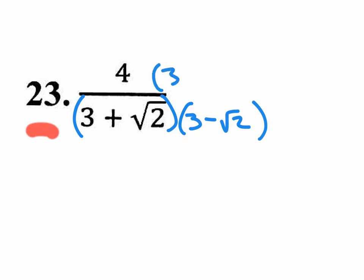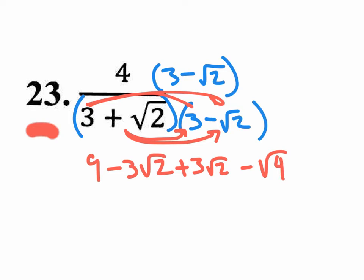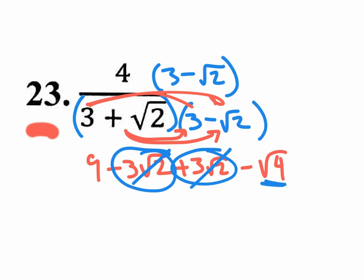What you do to the bottom, you must do to the top — 3 minus the square root of 2 up here also. On the bottom: 3 times 3 is 9. 3 times negative square root of 2 is negative 3 square root of 2. But positive square root of 2 times 3 gives you positive 3 square root of 2. And positive square root of 2 times negative square root of 2 is negative square root of 4. When you multiply by the conjugate, the middle terms disappear because one's negative, one's positive. And the square root of 4 is really 2. So you have 9 minus 2, which equals 7.